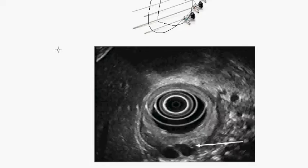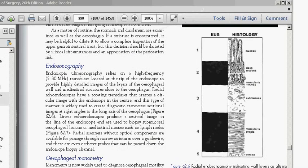By placing a transducer on the tip of the endoscope with high-frequency waves — five to thirty megahertz — we obtain what is called endosonography. The goal of endosonography is to visualize the layers of the esophagus: the mucosa, submucosa, muscularis mucosa, muscularis propria, and serosa, as well as structures around the esophagus in the posterior mediastinum.